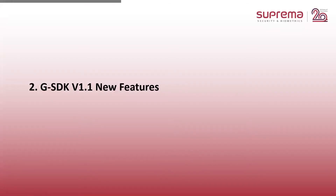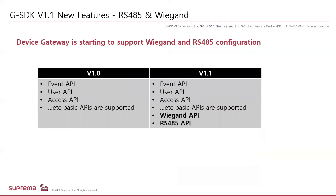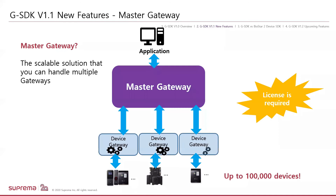GSDK version 1.1 new features. GSDK version 1.0 supported simple functions such as retrieving logs or user configurations, which was sufficient for users using Suprema devices only, without Wiegand devices or RS-485 slave devices. But now version 1.1 starts to support Wiegand and RS-485 configurations as well, so you can attach slave devices with GSDK. This is the main feature in version 1.1.